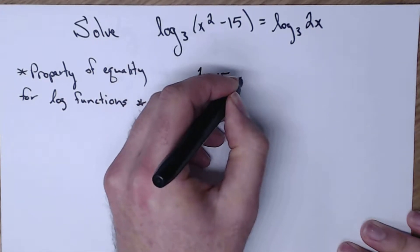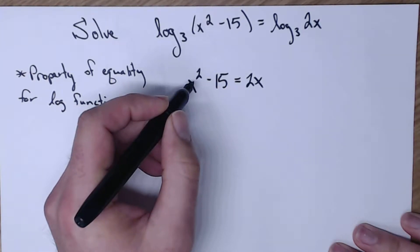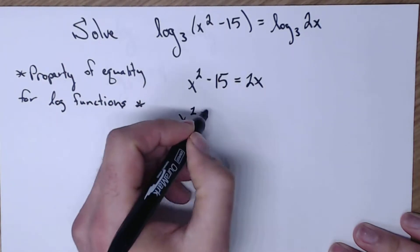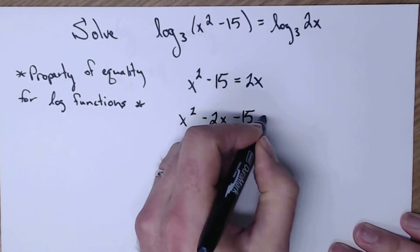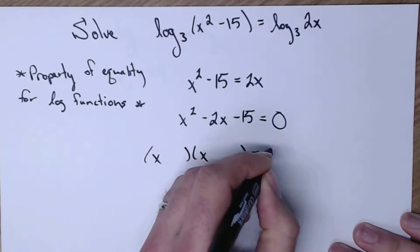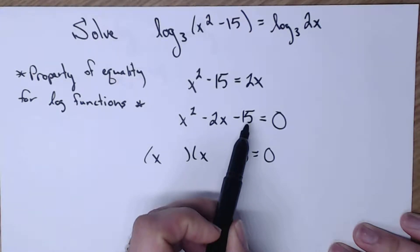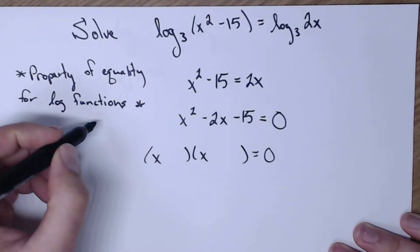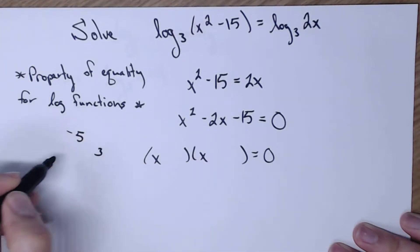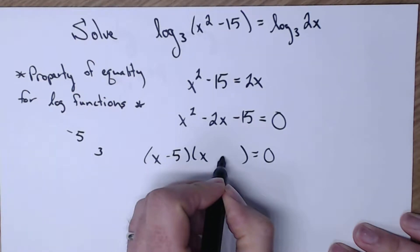So x squared minus 15 is going to have to equal that 2x. Now I have an x squared. So I'm probably going to have two solutions. So I'm going to get everything to the left side and then see if I can factor. So I'm going to subtract that 2x over. So I got x squared minus 2x minus 15 equals zero. Let's try and factor that. It's a typical trinomial factoring. So I'm going to have an x and an x. Well, what multiplies to get negative 15 adds up to get a negative 2? Well, 5 and 3 multiply to get me 15. It's a negative 15. So let's try negative 5 and positive 3. That adds up to get a negative 2. So negative 5 and plus 3.